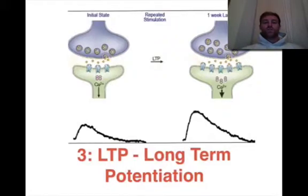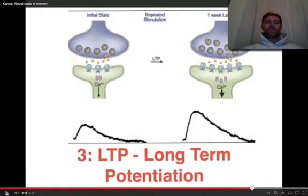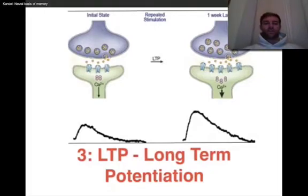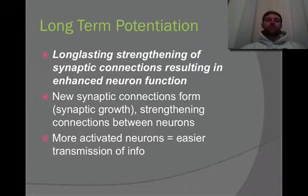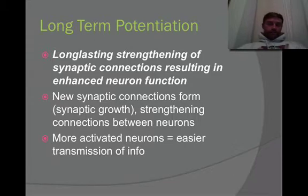Overall, we call this long-term potentiation — where there has been a change in the neuron that creates the opportunity for that neuron to change and create a long-term memory. Long-term potentiation means there is a structural or functional change in a neuron which will allow for a long-term memory to be created in the future. This is described as a long-lasting strengthening of synaptic connections resulting in enhanced neuron function. The more we activate a neuron, the more connections it makes if the pathway is always the same — we create more dendrites, more axons, and therefore the message moves through quicker. That is what happens when we learn or create a new memory.